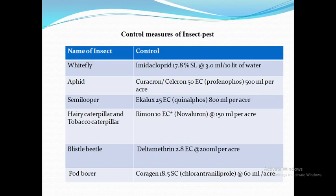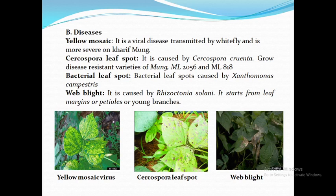Diseases: Yellow mosaic disease of many legumes in India and other South Asian countries is transmitted by geminiviruses belonging to the family Geminiviridae and genus Begomovirus. Mung bean yellow mosaic disease is characterized by a bright yellow mosaic on the leaves of infected plants and causes significant loss of mung bean crops in India. It is transmitted by whitefly and is more severe in kharif season.